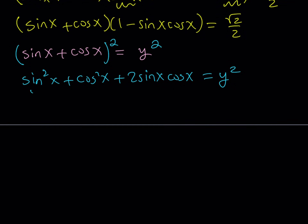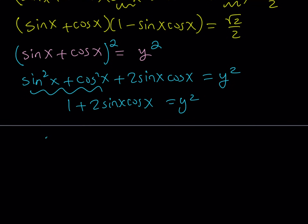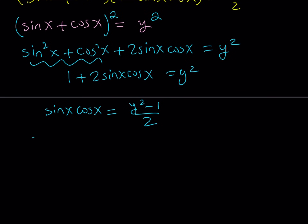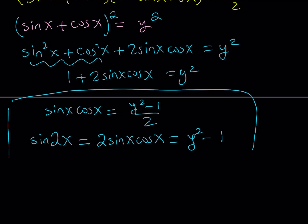At this point, we know that sine squared plus cosine squared is equal to 1. So this becomes 1 plus 2 sine x cosine x equals y squared. If you subtract 1 and divide by 2, we get sine x times cosine x equals y squared minus 1 divided by 2. Since we're looking for sine of 2x, we can multiply both sides by 2. So sine 2x from the double angle formula is equal to 2 sine x cosine x, which equals y squared minus 1 in terms of y.